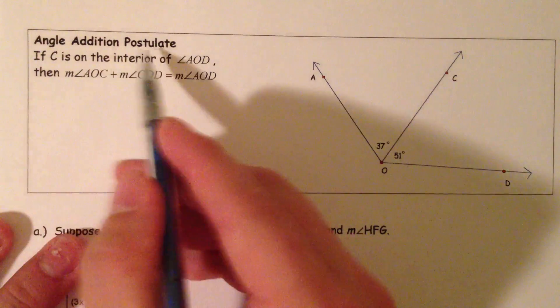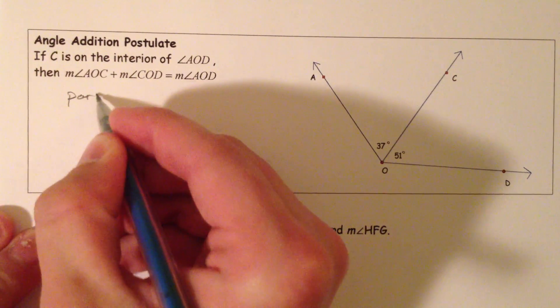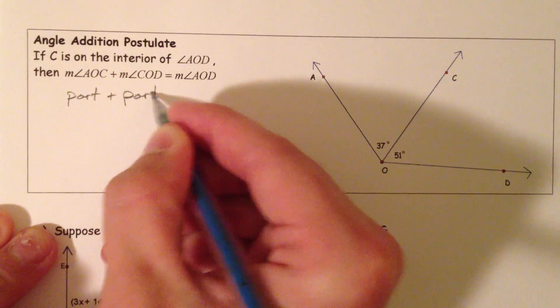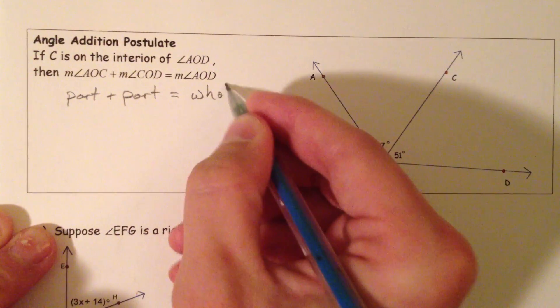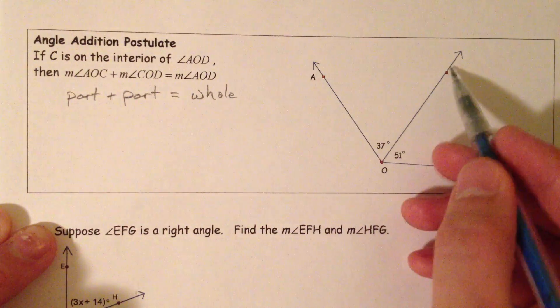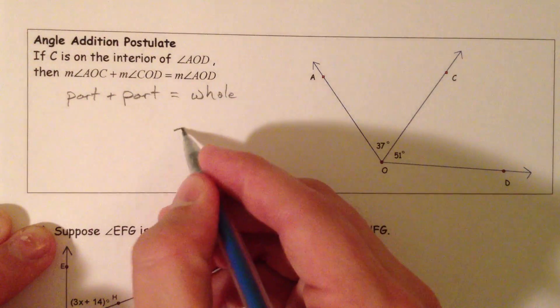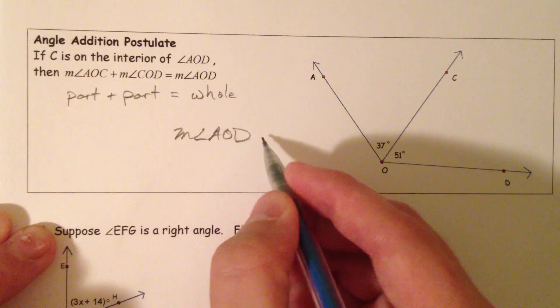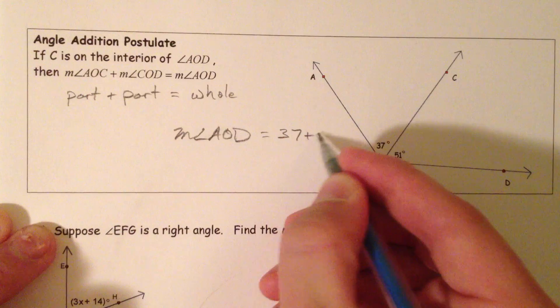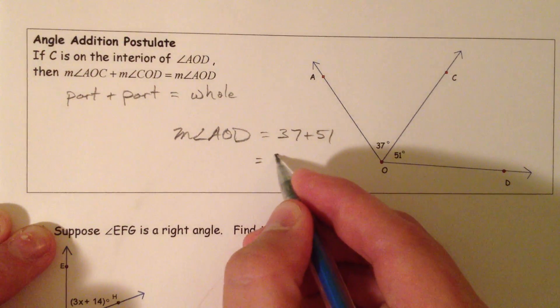Just like we have the segment addition postulate, we have the angle addition postulate: part plus part equals the whole. So angle AOC and angle COD — if you add the two measures up, you get the big angle. The measure of angle AOD would be 37 plus 51, which equals 88 degrees.